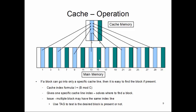Since the index i is not unique — different block addresses can produce the same cache line index — we look at the tag stored in the cache line and compare it with the tag computed for the given address. If they match, the block is present in that cache line; if they don't match, it is not present in the cache, which means a cache miss.